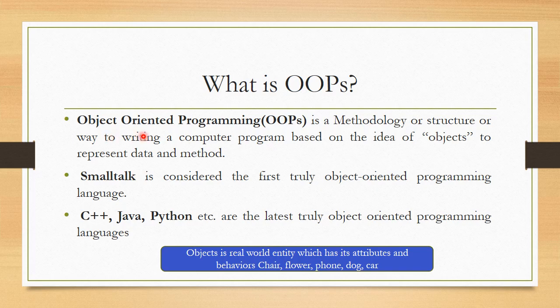OOPs is defined as Object Oriented Programming. It is a methodology, or a structure, or a way to writing a computer program based on the idea of objects to represent data and behavior. Programming is a set of instructions. Those sets of instructions behave as a program, and that program uses some logic and real world concepts. OOPs is a design — a way to design a program.